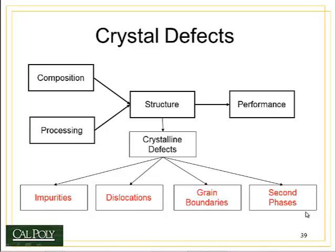Going back to our big picture, we've been talking a lot about crystalline defects. There are a number of kinds: impurities, which are individual atoms that do not belong in the crystal; dislocations, or extra planes of atoms that don't belong in the crystal; grain boundaries, which are surfaces of disorder between two crystals of different orientation; and second phases, when you have a different way of organizing matter embedded within yet another.